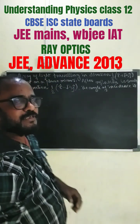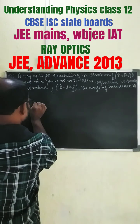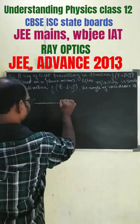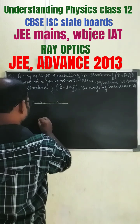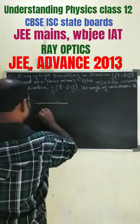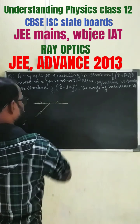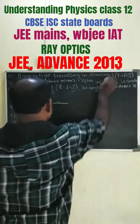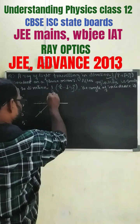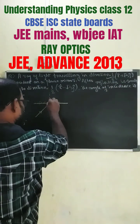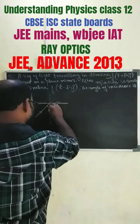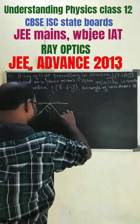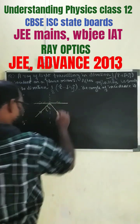So let us first draw a plane mirror. Suppose this is the plane mirror I have drawn, and this is the direction of the incident ray. This one will be the normal, this will be the angle of incidence, and it reflects back in this direction.